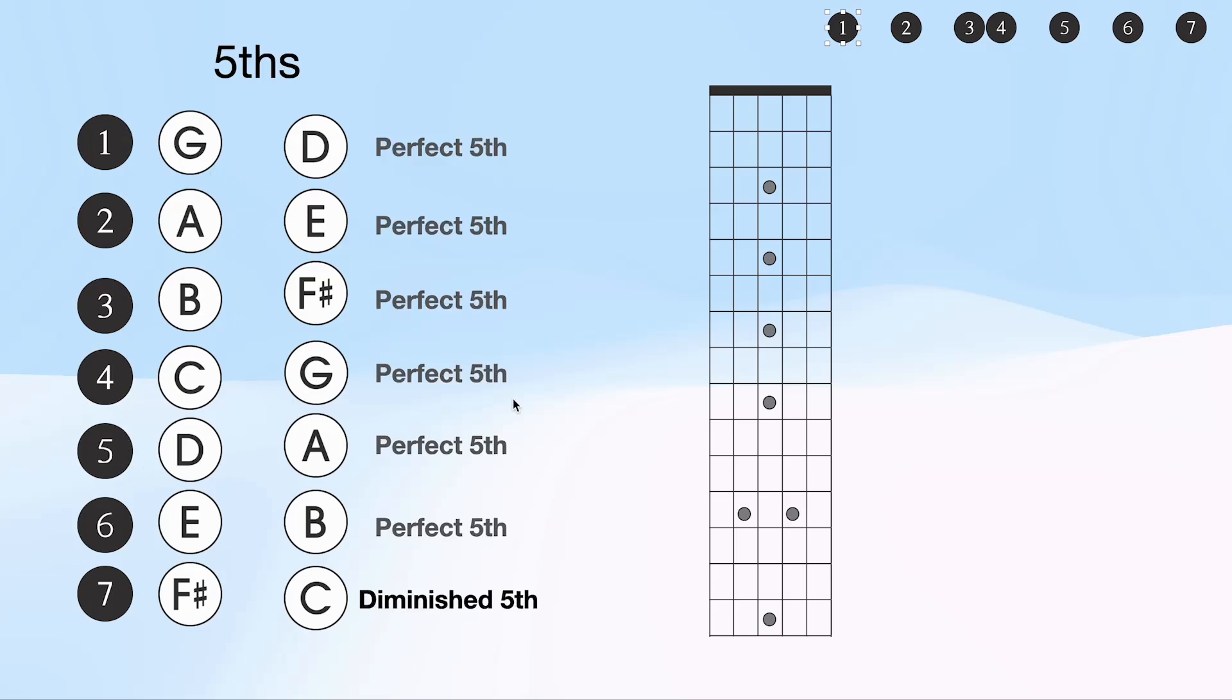Learning perfect fifths in a major scale is convenient for harmony and structure because there's a lot of consistency. From each note in a major scale, there exists a perfect fifth, except the seventh. There's a diminished fifth.